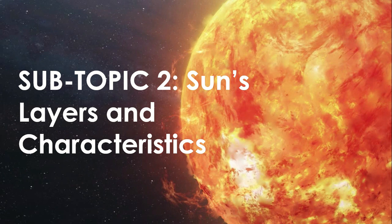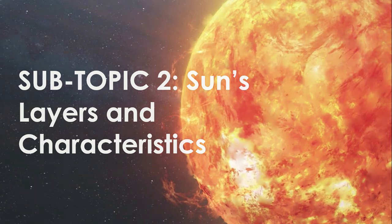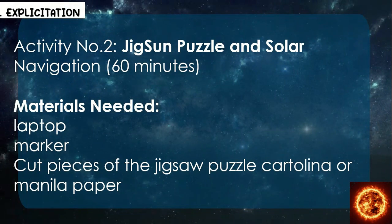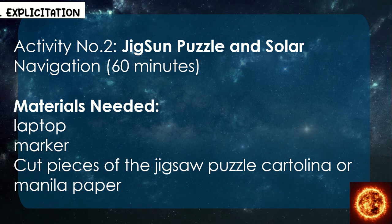Sub-topic 2: Sun's Layers and Characteristics. Let's have Activity Number 2: Jigsaw Puzzle and Solar Navigation. It is good for 60 minutes. Materials needed: laptop, marker, cut pieces of the jigsaw puzzle, cartolina, or Manila paper.